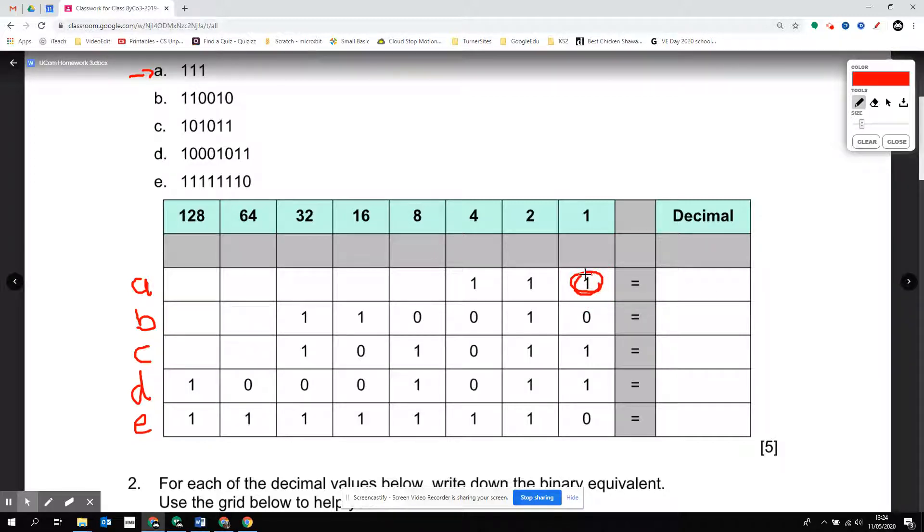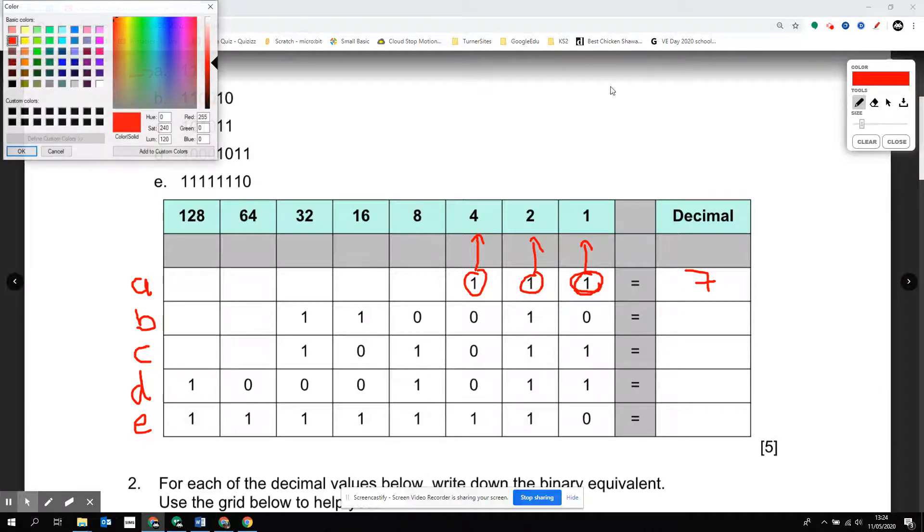If there's a 1 here you add the number that's above it, so I add 1 to 2 and to 4 to give me 7. 4 plus 2 plus 1 equals 7. Do the same with b.